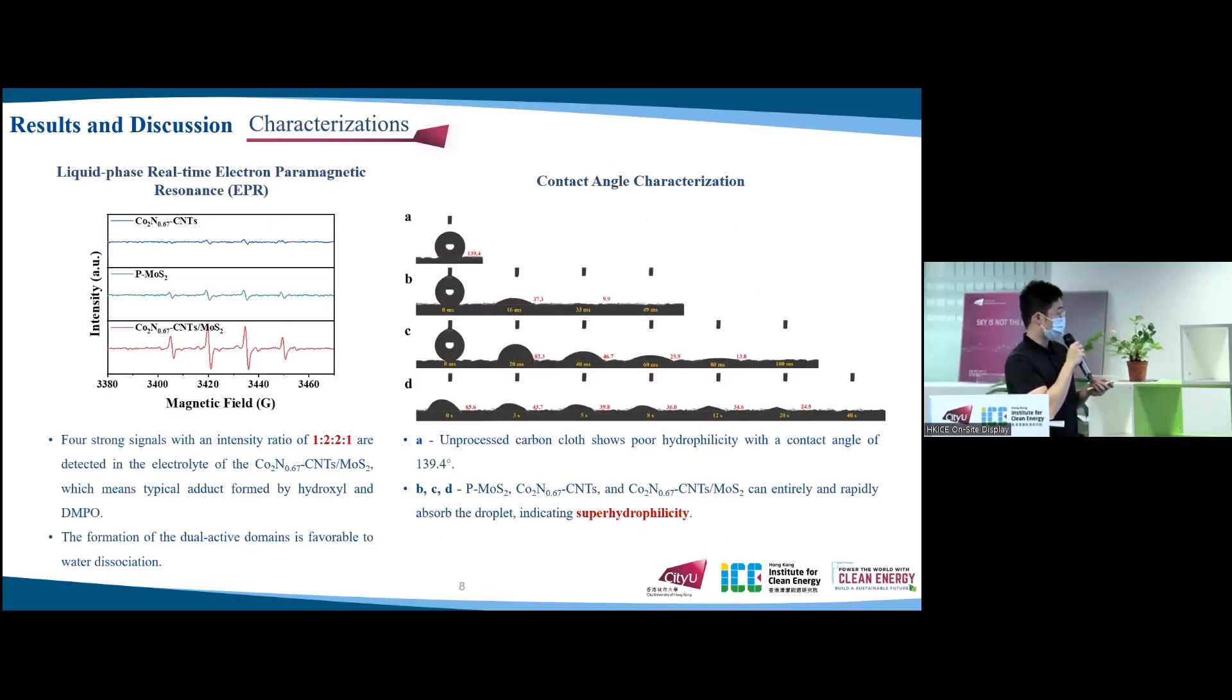The EPR was conducted by using the DMPO to track the hydroxyl radicals to disclose the water dissociation ability of catalysts. Four strong signals with an intensity ratio of 1:2:2:1 are detected in the electrolyte of the cobalt nitride-CNT at MoS2, which means typical adduct formed by hydroxyl and DMPO. These findings suggest that more hydroxyl was generated during the HER process. In contrast, pristine molybdenum disulfide and cobalt nitride-CNT show weak signals, indicating poor activity in water dissociation. These results manifest that the formation of the dual-active domains is favorable to water dissociation.